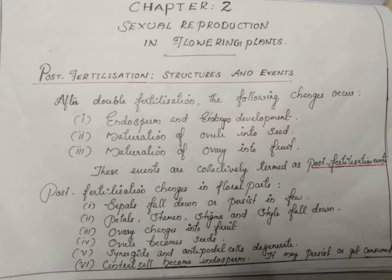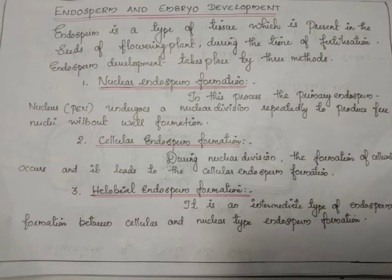The endosperm may persist or get consumed. Endosperm is a type of tissue present in the seeds of flowering plants. Endosperm development takes place by three methods. The first method is nuclear endosperm formation. In this process, the primary endosperm nucleus undergoes nuclear division repeatedly to produce free nuclei without cell wall formation.